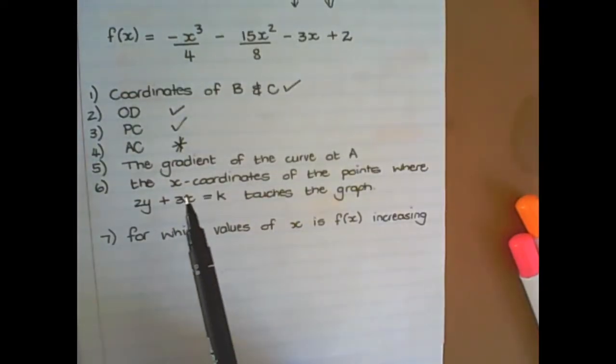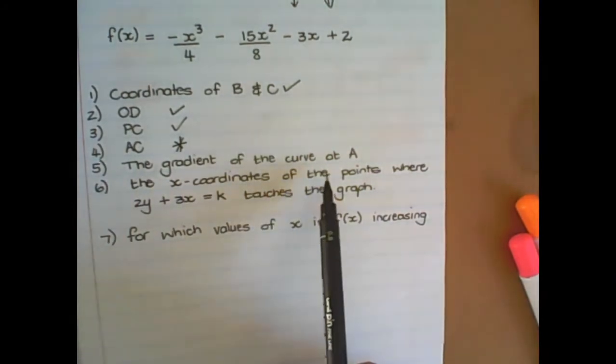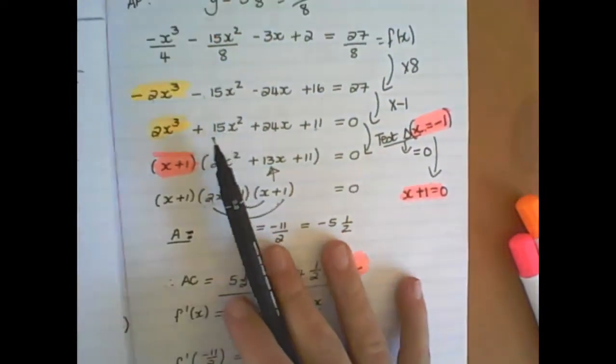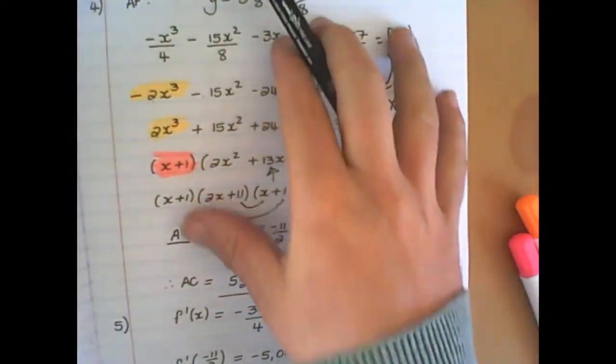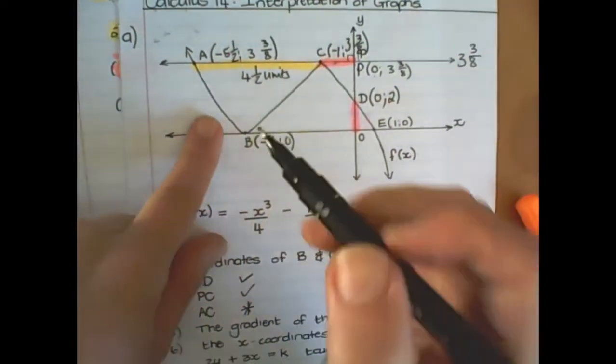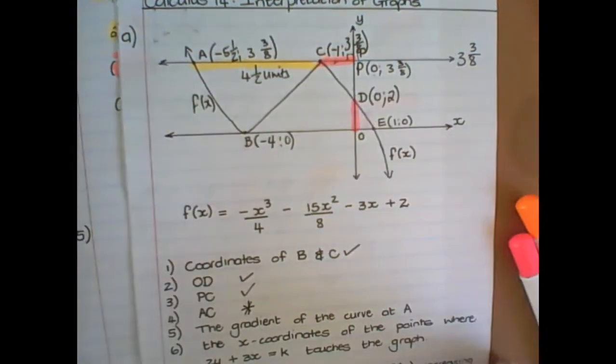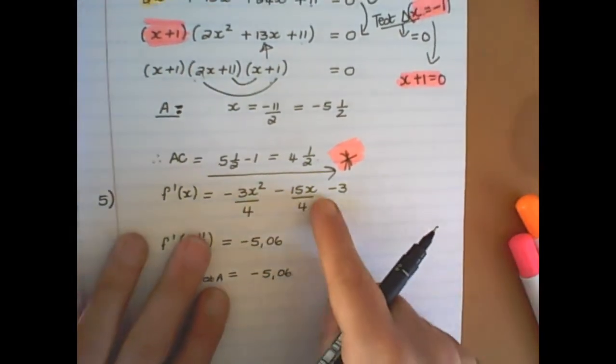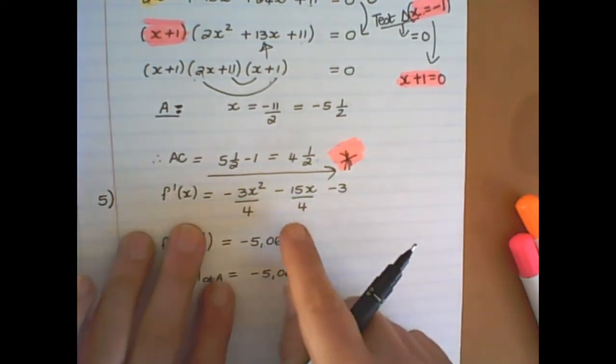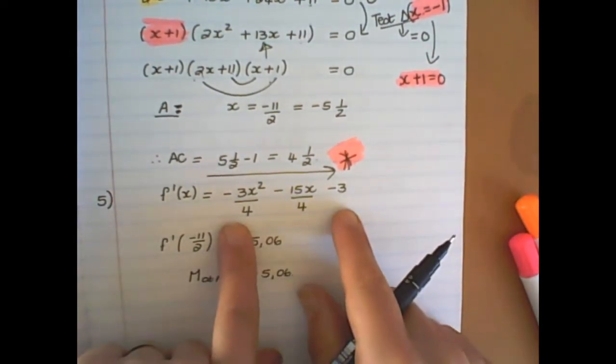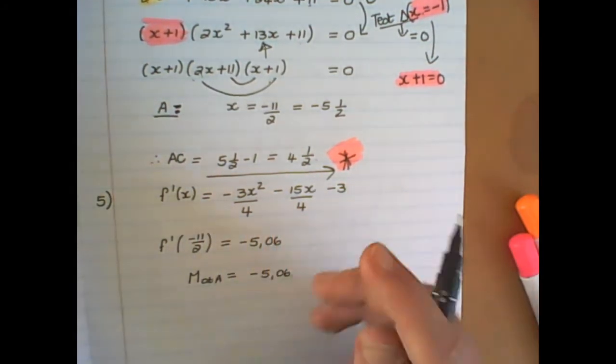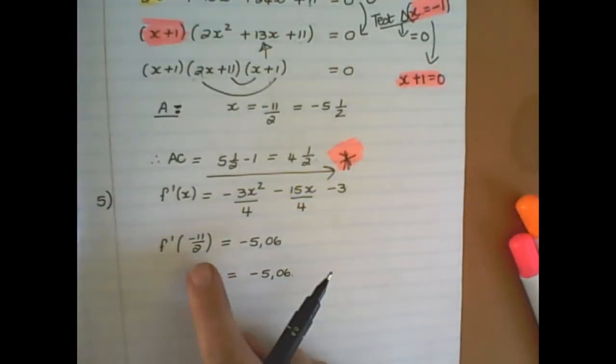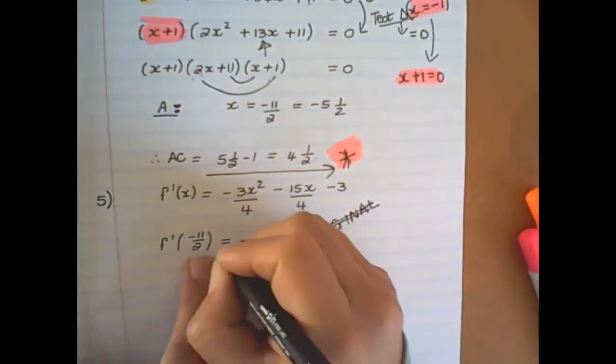The next question is to find the gradient of the curve at A. Now, when they speak about gradient, you're not working with this equation which you've manipulated anymore. You're working again with the original value. So, in one of the previous sums, you already found the first derivative. So you don't have to find the first derivative again or differentiate again. You just simply use what you found earlier. And to find the gradient at A, you need to substitute the x value of A, which is minus 5 and a half. So I substituted minus 5 and a half into the gradient formula.